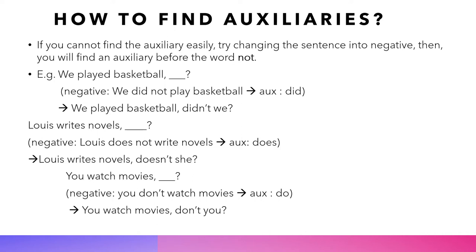'Louis writes novels.' The negative sentence is 'Louis does not write novels,' so we get the auxiliary 'does,' and we'll have 'Louis writes novels, doesn't she?' The last example: 'You watch movies.' Change it to negative: 'You don't watch movies.' From this, we find the auxiliary 'do,' and therefore in the tag we use 'don't you?' — 'You watch movies, don't you?'